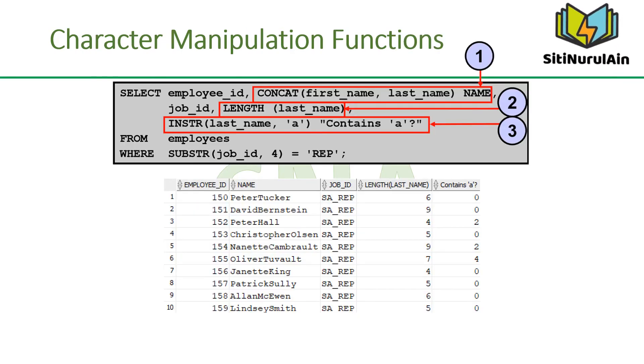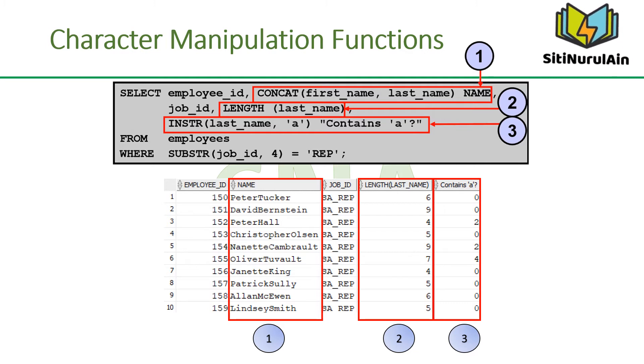The slide example displays employee first names and last names joined together, the length of the employee last_name, and the numeric position of the letter A in the employee last name for all employees who have the string REP contained in the job ID starting at the fourth position of the job ID.